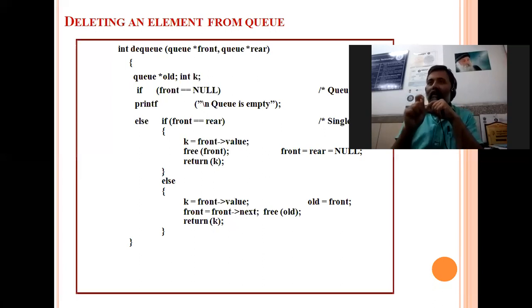We have one variation that here we are using two pointers, front and rear. So this is all about the queue implementation by linked list.